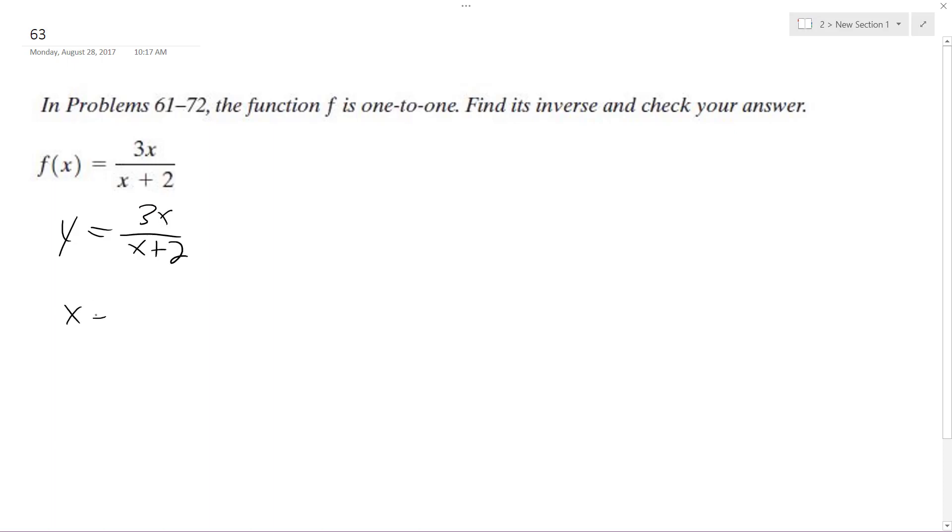We're going to swap x and y, so x is equal to 3y over y plus 2. Multiply y over, so x times quantity y plus 2 equals 3y. So then we're going to have xy plus 2x equals 3y.